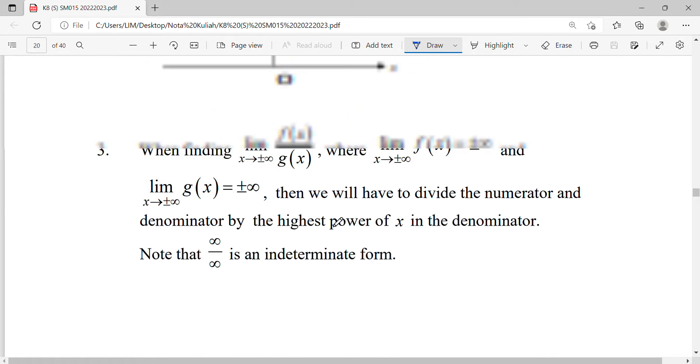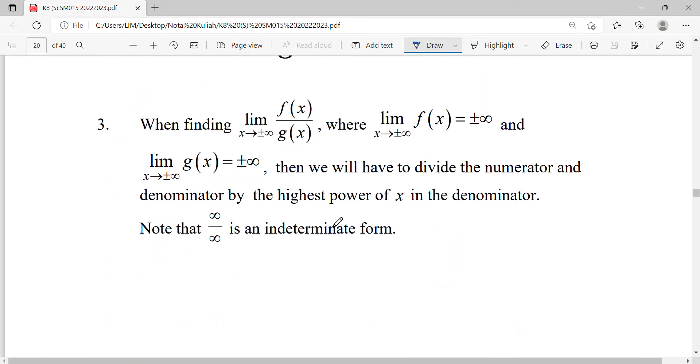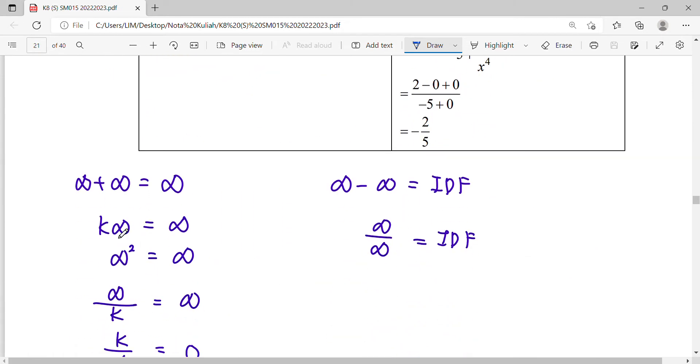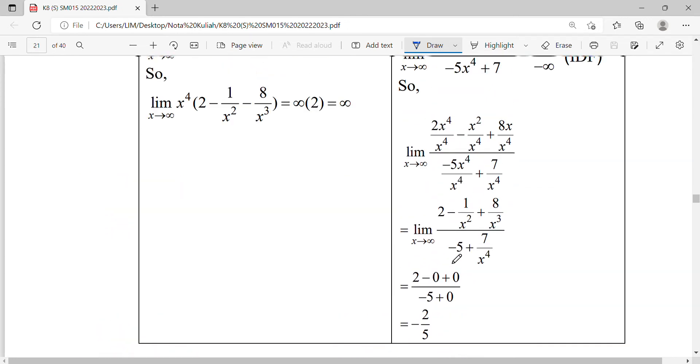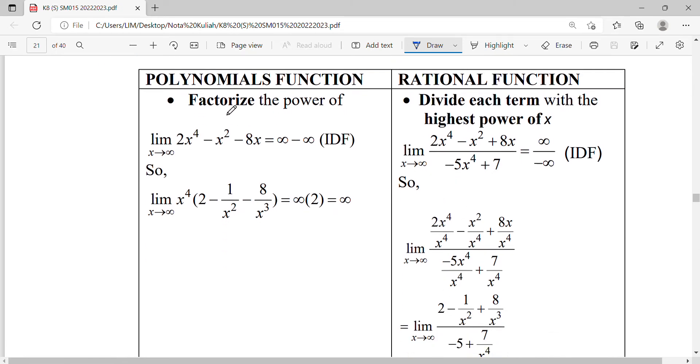When dealing with limit at infinity, we can substitute infinity and calculate to see if we get a result. If we get an indeterminate form (IDF), then we do factorization or divide by the highest power of x. When you substitute infinity here, it becomes infinity minus infinity, which is IDF, so we cannot calculate directly.